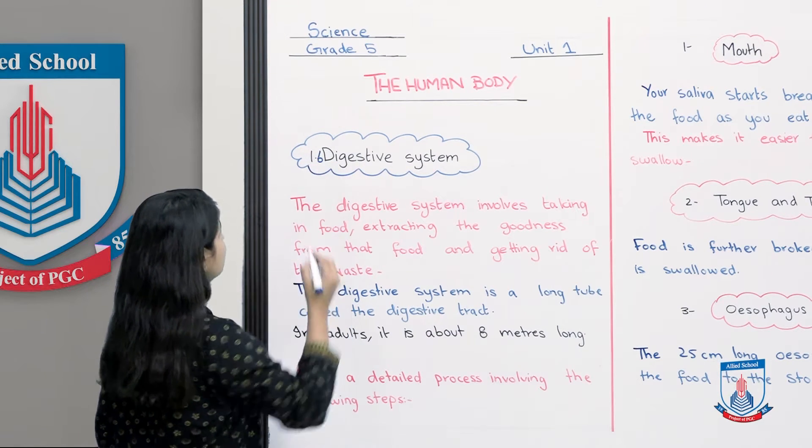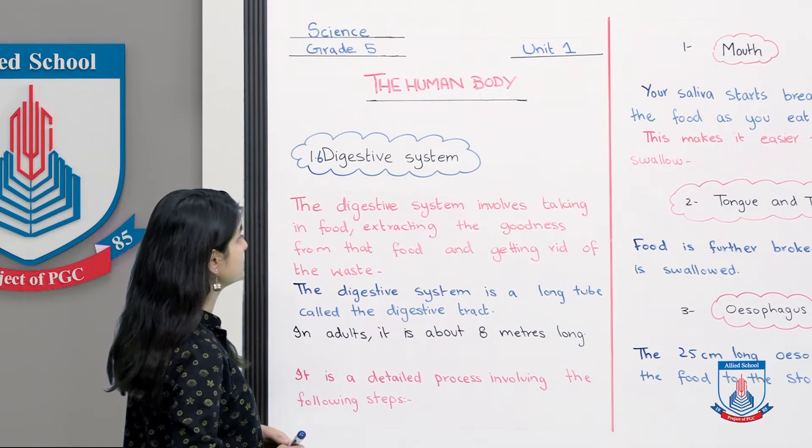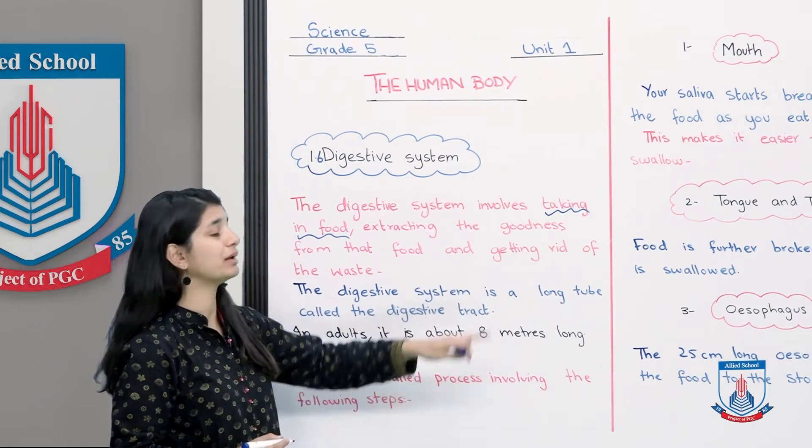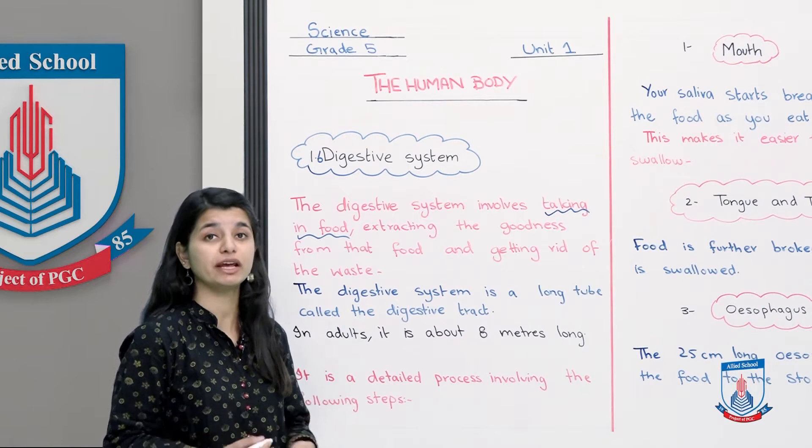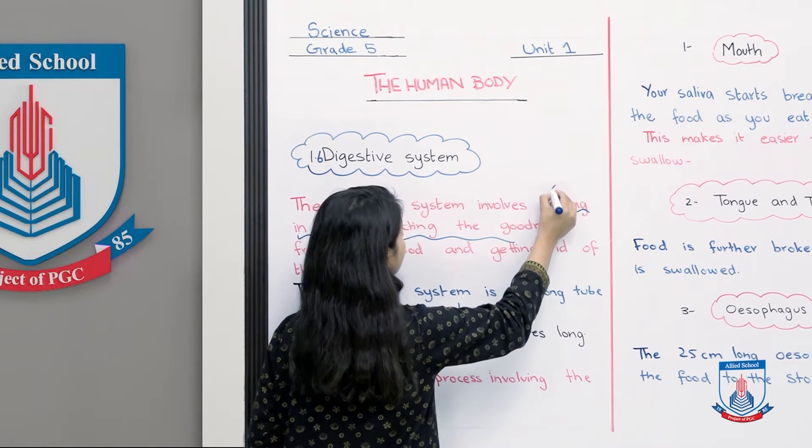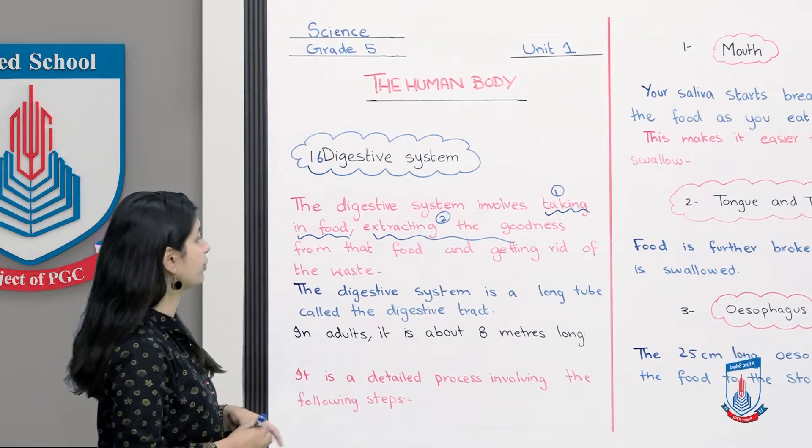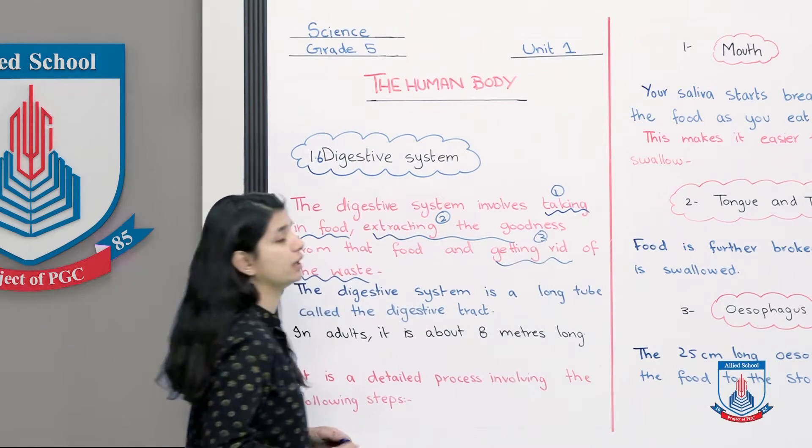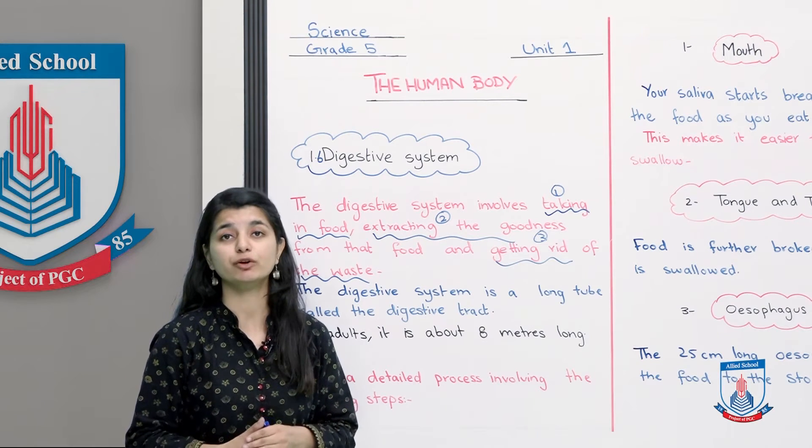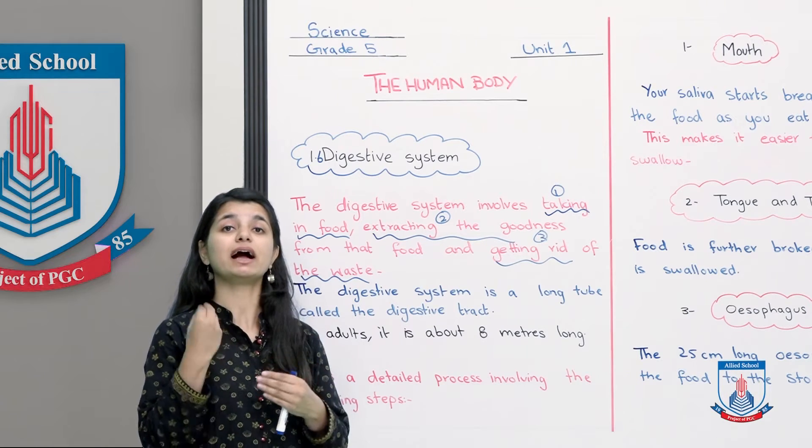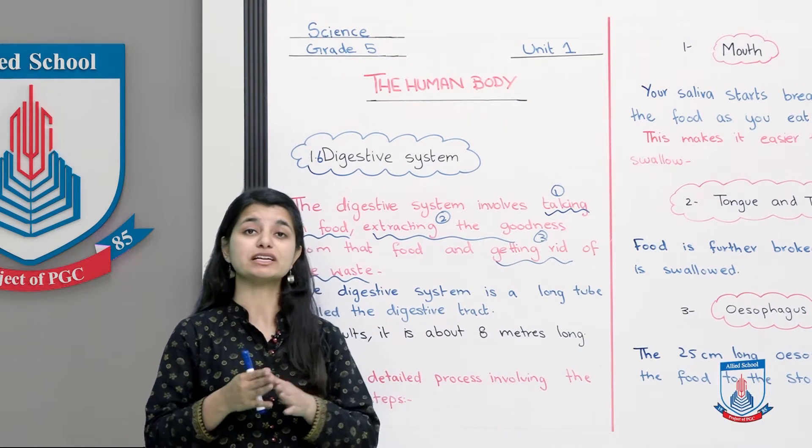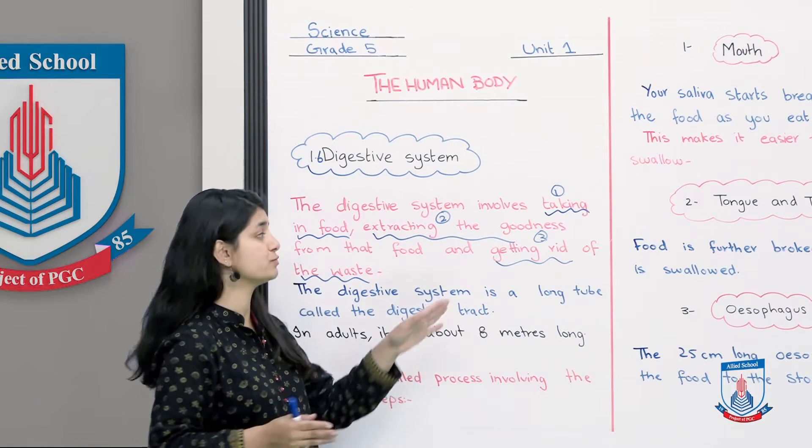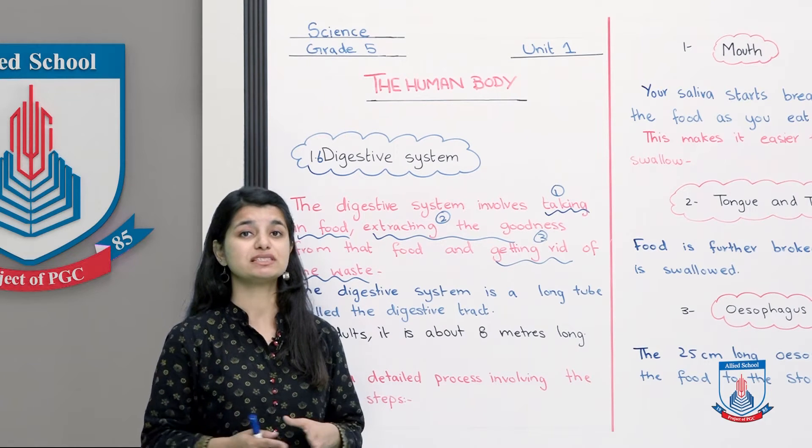Let's read the definition. The digestive system involves taking in food, extracting the goodness, and getting rid of the waste. So the first task is when you take your food inside, that's where the cycle begins. The digestive tract extracts whatever is good for your body and removes what is waste.